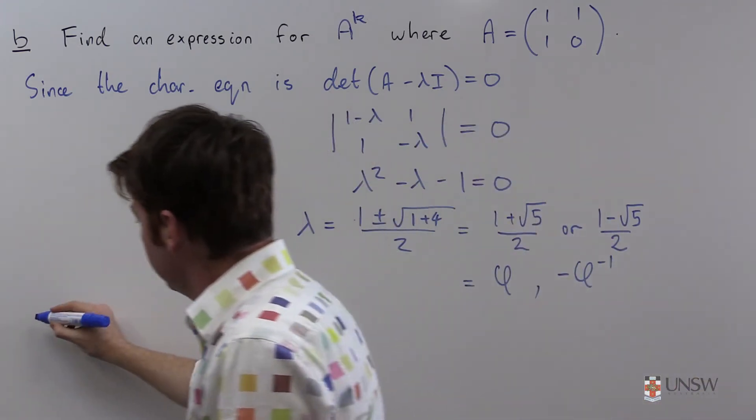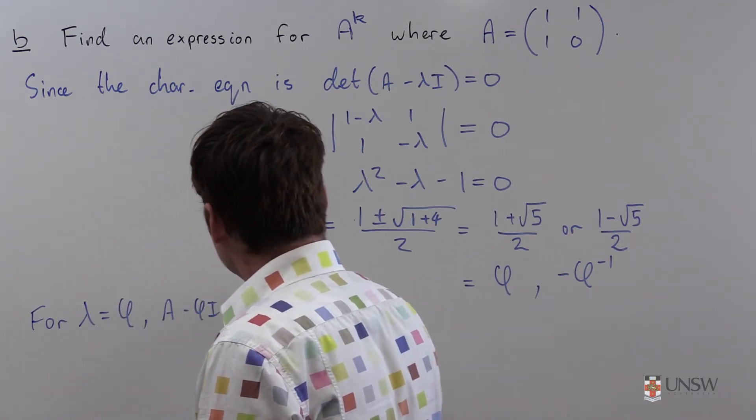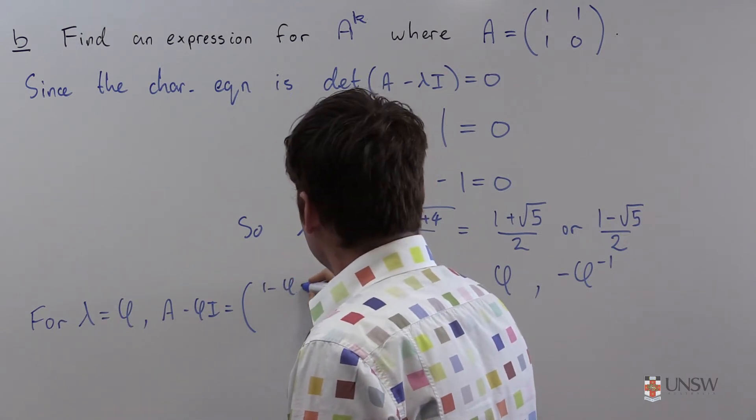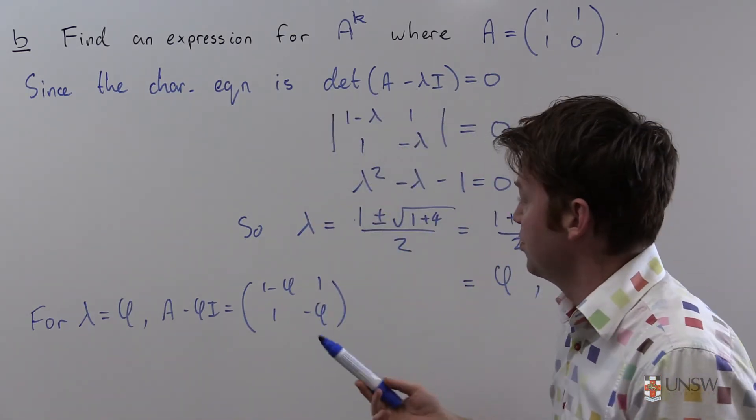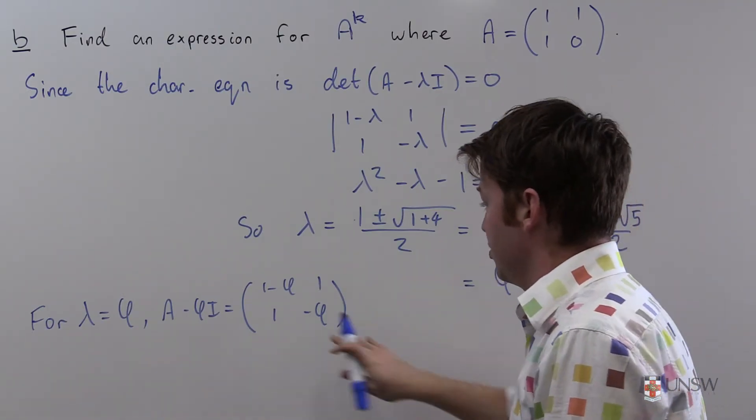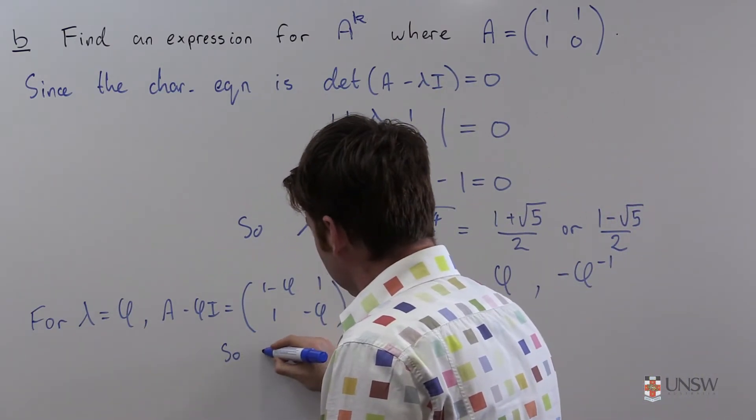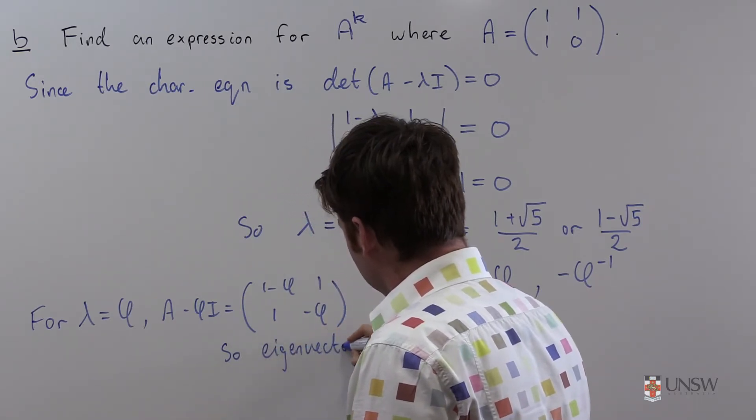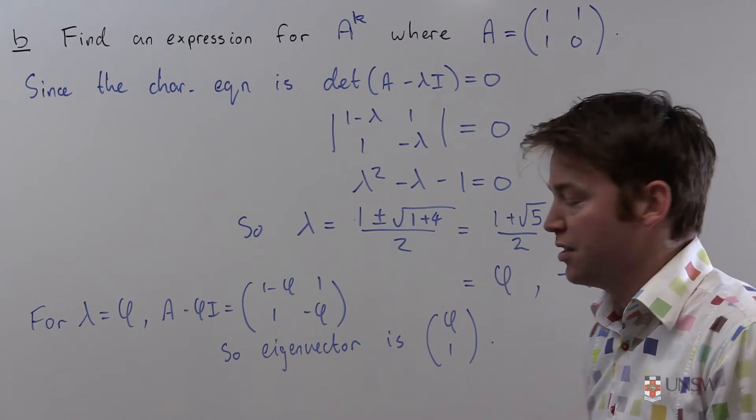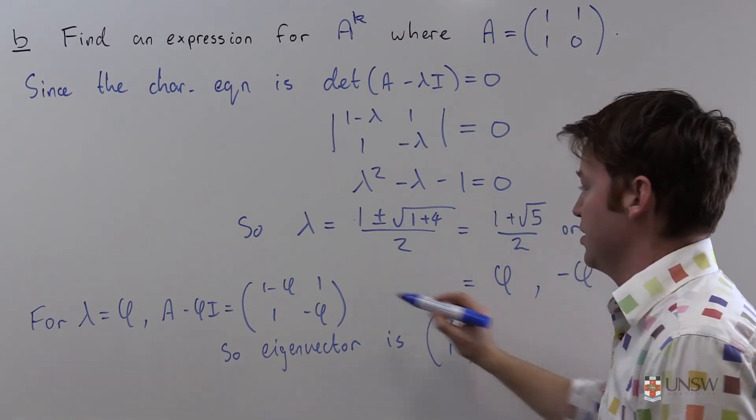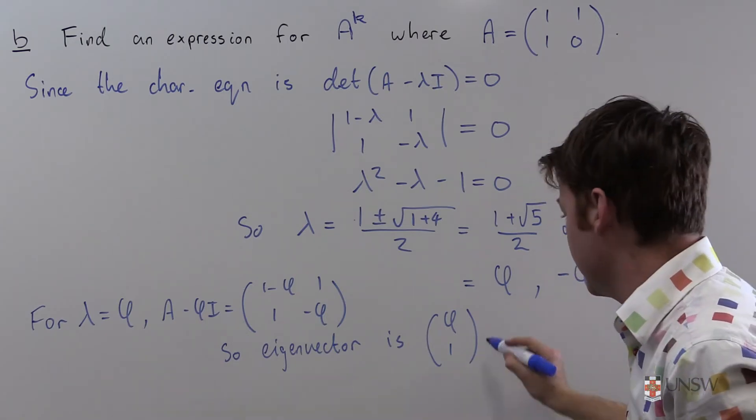So let's go and find eigenvectors for λ equals φ. A - φI is equal to the matrix [1-φ, 1; 1, -φ]. And there's a cheap trick for finding eigenvectors when you've got a 2×2 matrix and distinct eigenvalues. You can just take one of these entries, reverse it, and negate one. So here's [φ, 1]. And whenever you're pulling a cheap trick like this, it's probably worthwhile to just check that this is in the kernel.